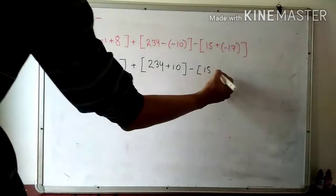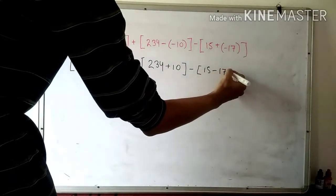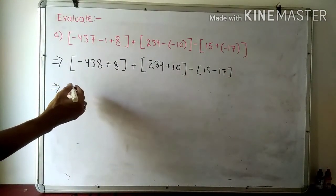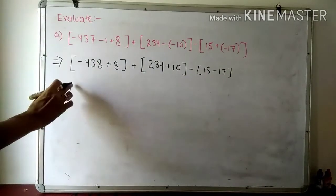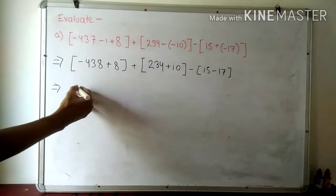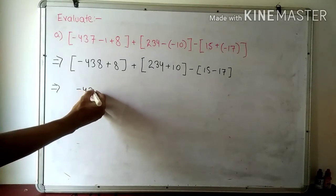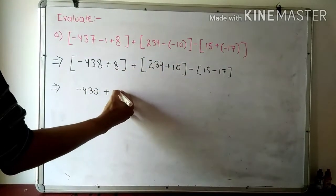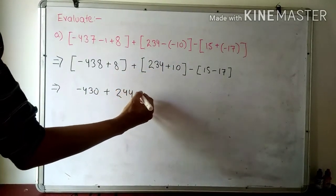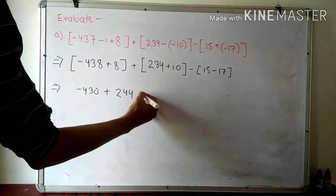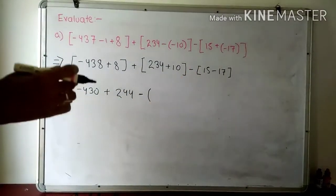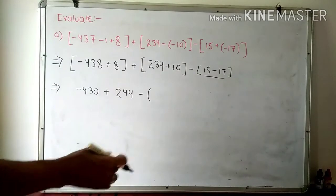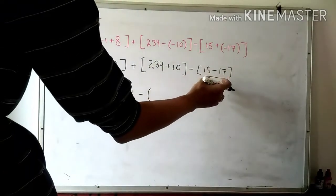Now we are going to solve inside the bracket. Minus 438 plus 8 will become minus 430. And here, plus 234 plus 10 will become 244. A minus symbol is present.